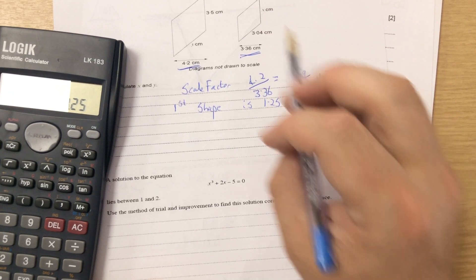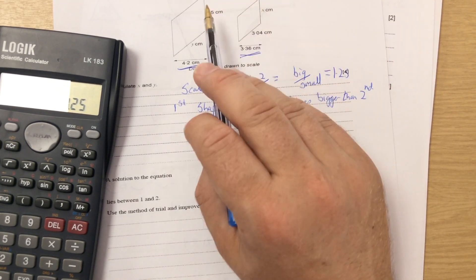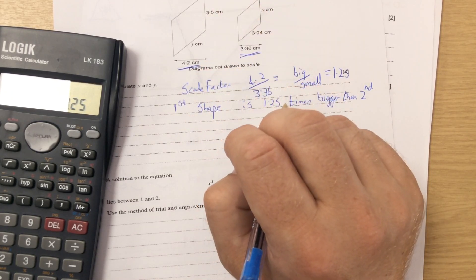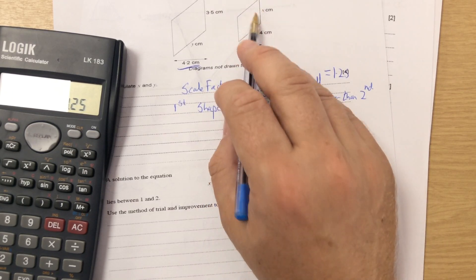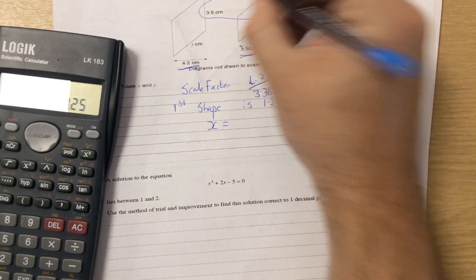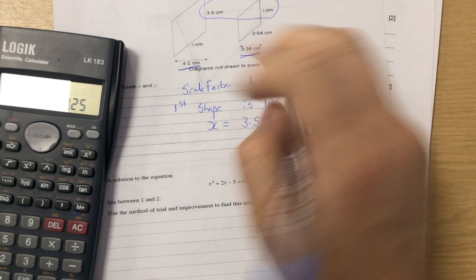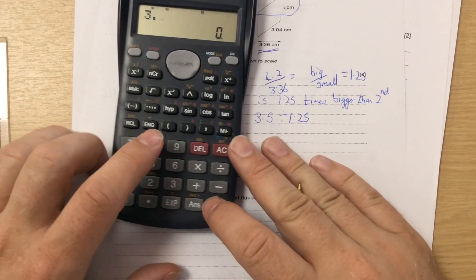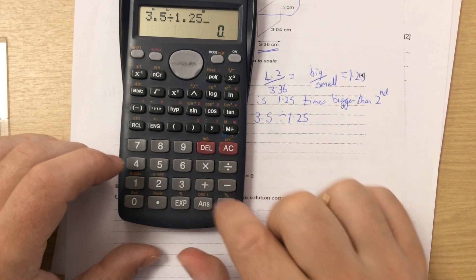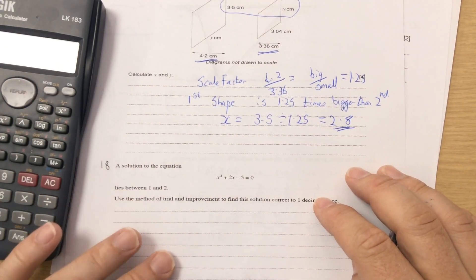So for this one here, I'm looking at x and 3.5. This way, x isn't smaller than 3.5. So because it's smaller, instead of being 1.25 times bigger, it's 1.25 times smaller. So because I'm finding the side in the smaller one, it becomes x is 3.5 divided by 1.25. So 3.5 divided by 1.25 is 2.8. So this one is 2.8.